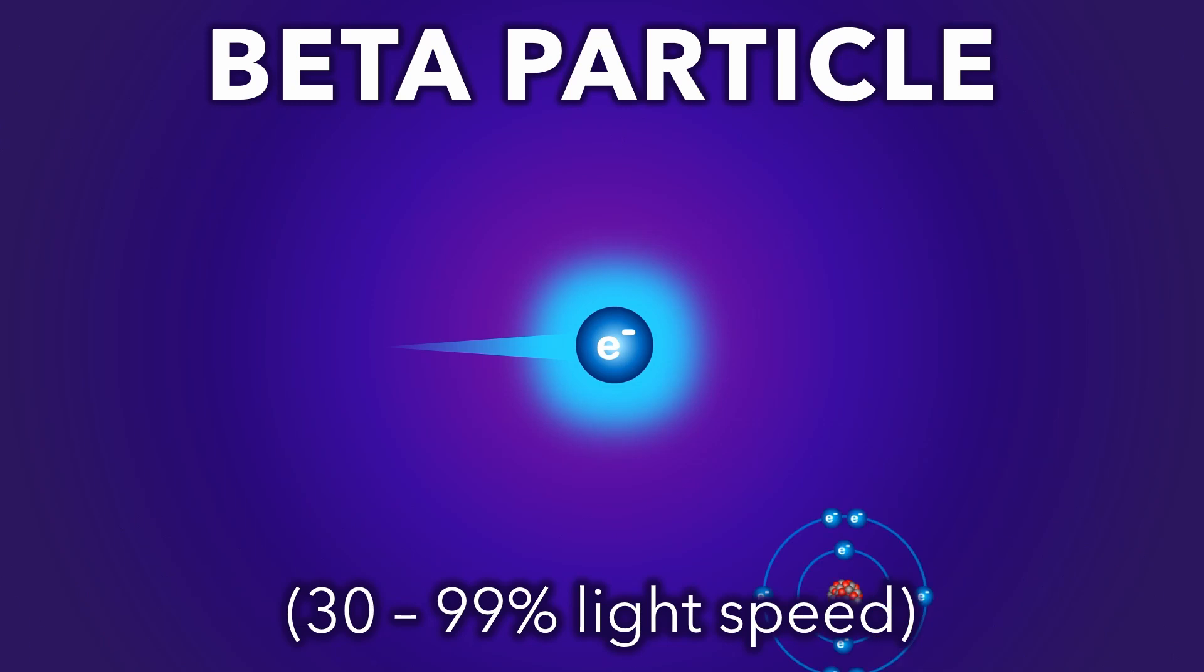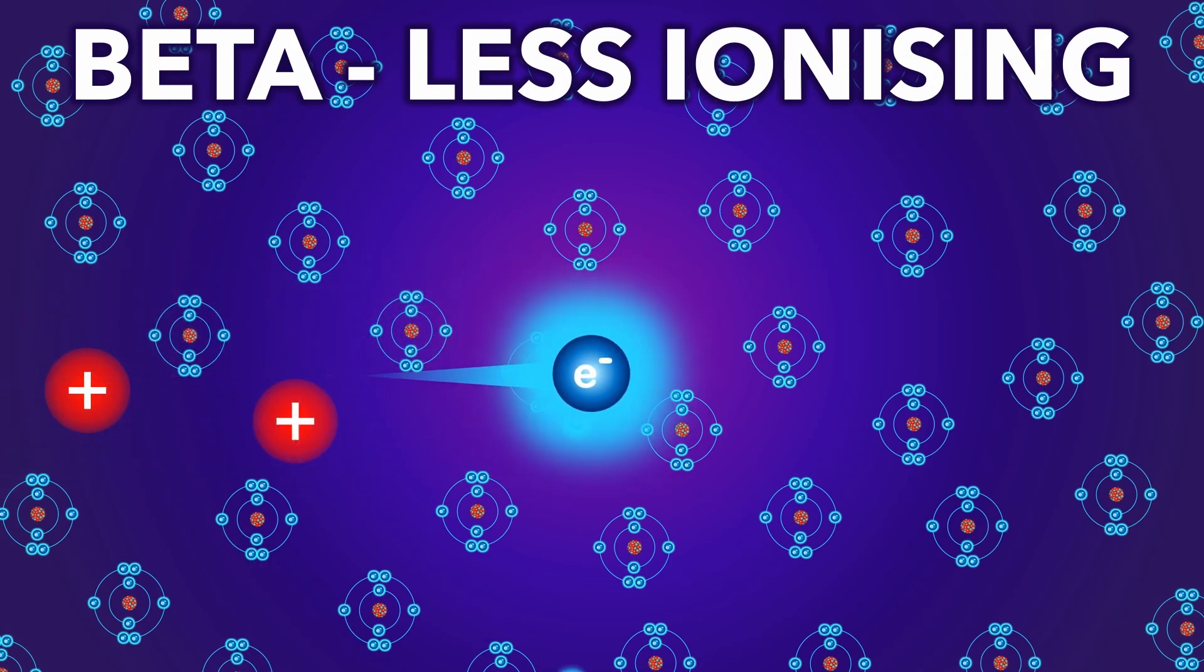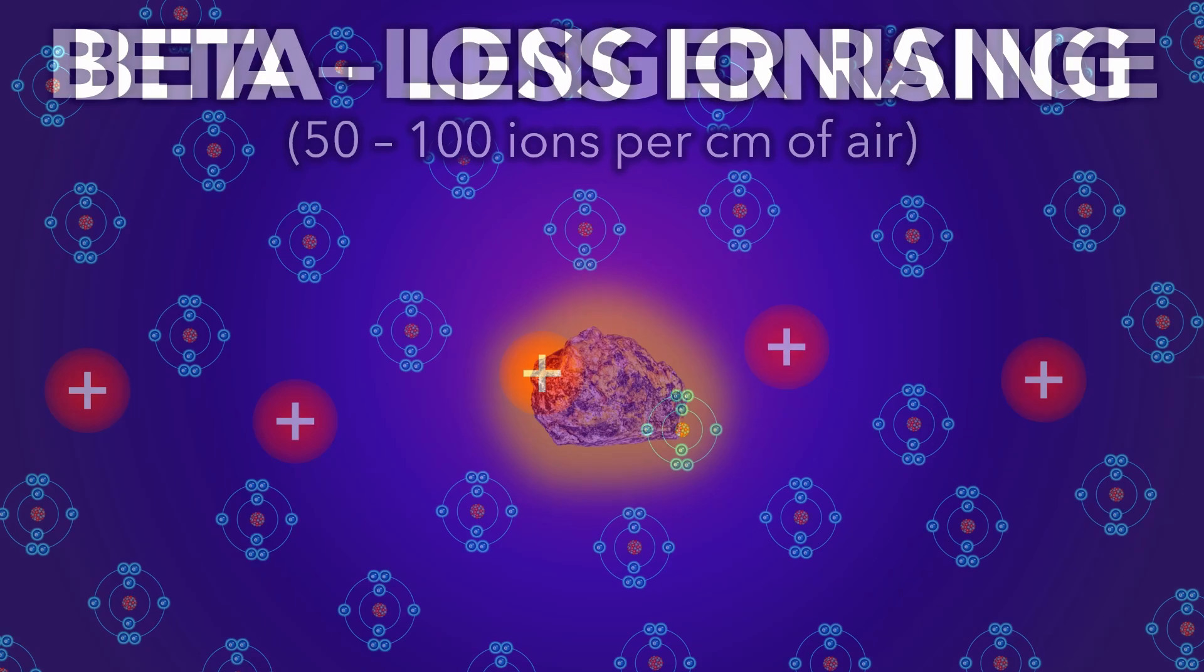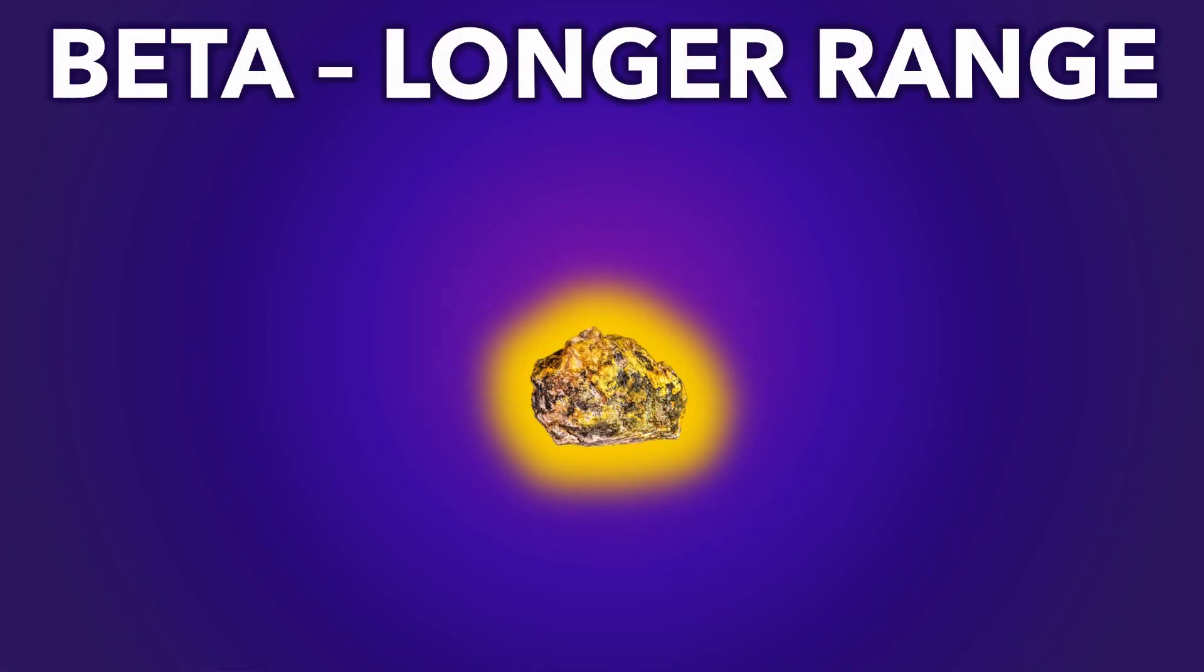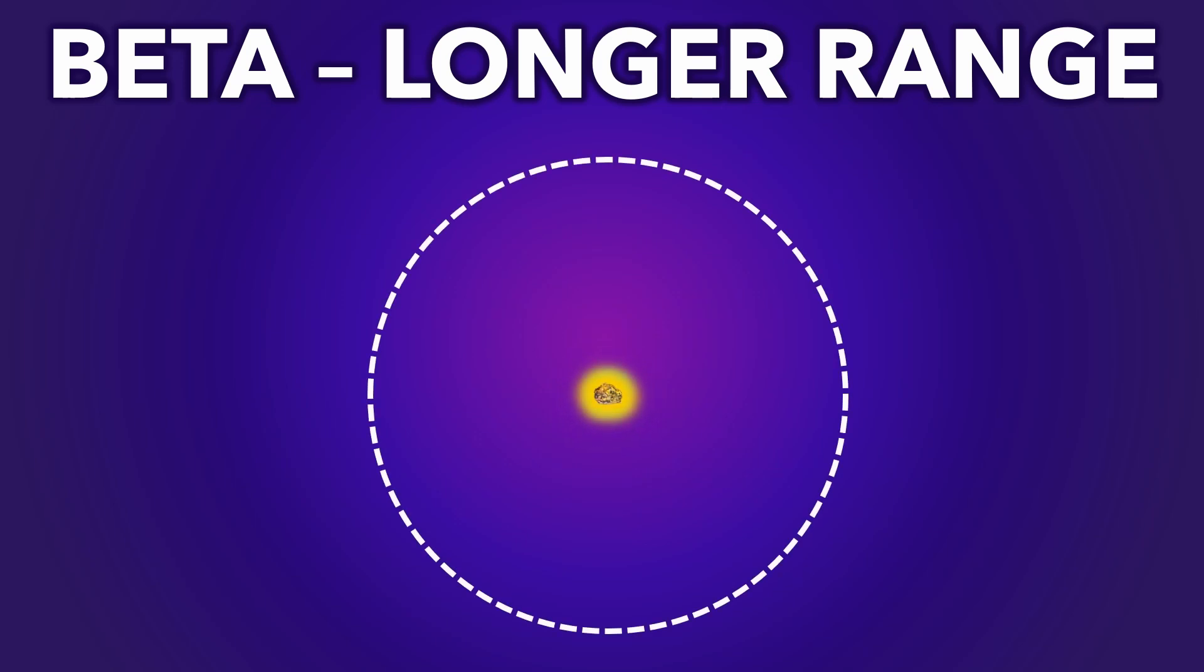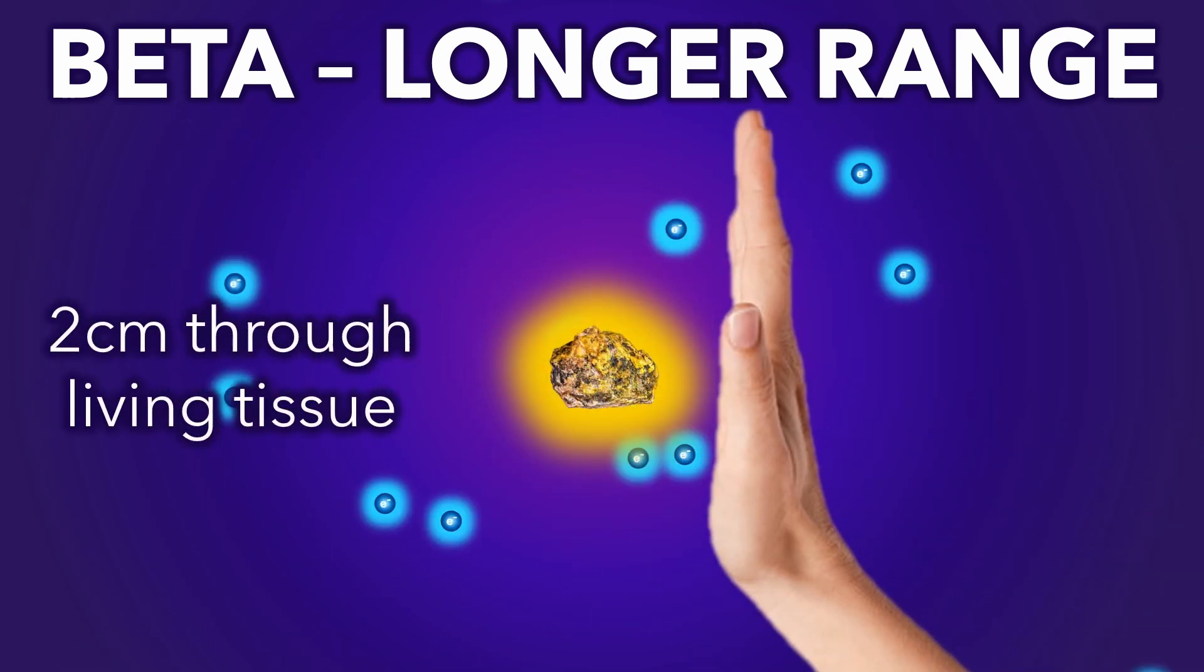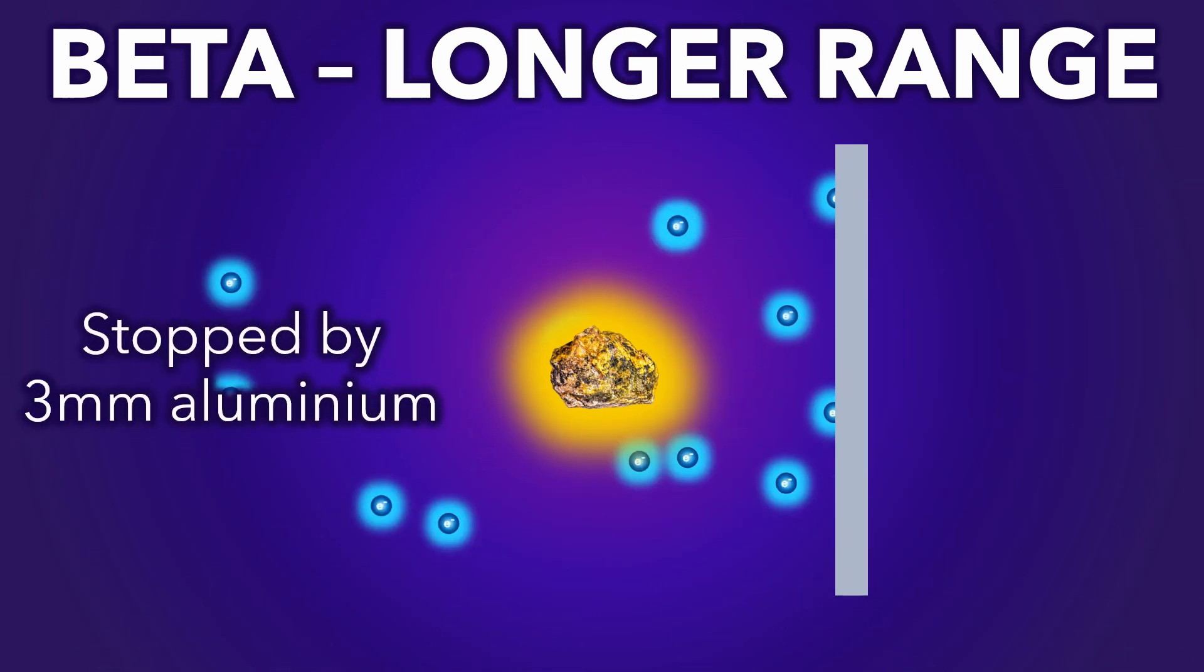The beta particle is emitted at about 60% light speed. The beta particle is less ionizing than alpha, creating 50 to 100 ions per centimeter of air. But because it loses energy slower, its range is larger than alpha, about 1 meter in air, up to 2 centimeters in living tissue, or 3 millimeters in aluminum.